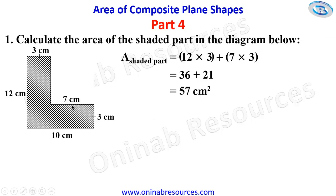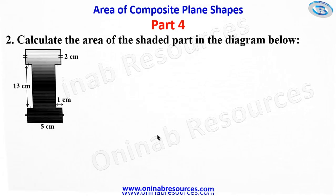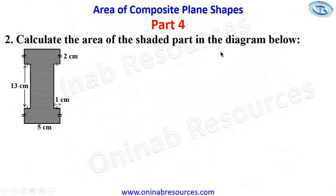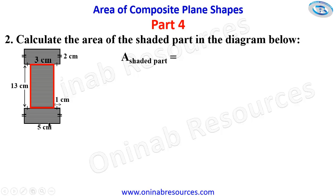We then go to problem 2. For problem 2, calculate the area of the shaded part in the diagram. To calculate the area of the shaded part, we are going to divide the shape into 3 rectangles. The first rectangle has a length of 13 centimeters and a breadth of 3 centimeters, since from one side to this place is 1 centimeter and from here to this place is also 1, but the total length is 5, so 5 minus 1 minus 1 gives 3 centimeters. The area of this rectangle is 13 times 3.